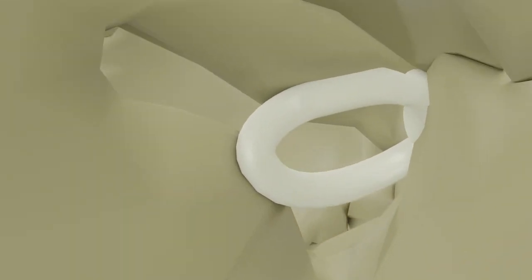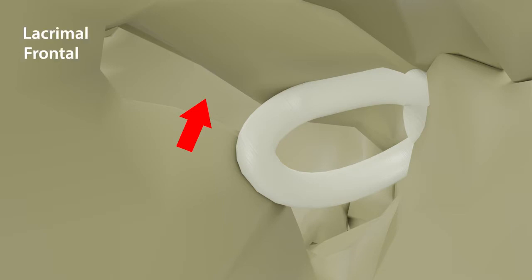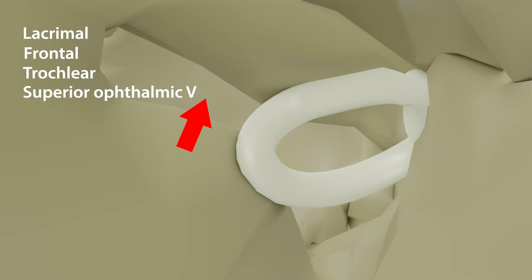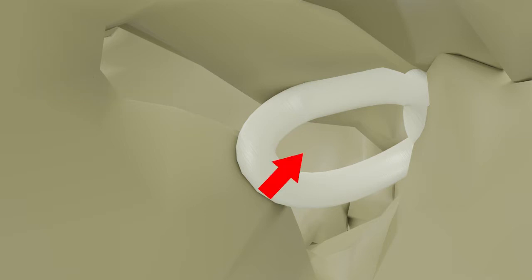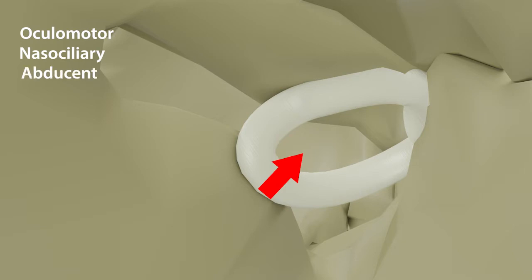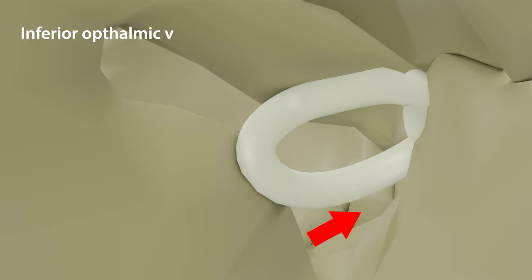As we already saw, the superior orbital fissure is divided into lateral, middle, and medial parts by the ring of Zinn. The lateral part transmits the lacrimal, frontal, and trochlear nerves and the superior ophthalmic vein. The middle part transmits the upper and lower divisions of the oculomotor nerve, with the nasociliary nerve lying between these two divisions and the abducent nerve lying inferolateral to all of these. The medial part transmits the inferior ophthalmic vein and some sympathetic nerves from the plexus around the internal carotid artery.